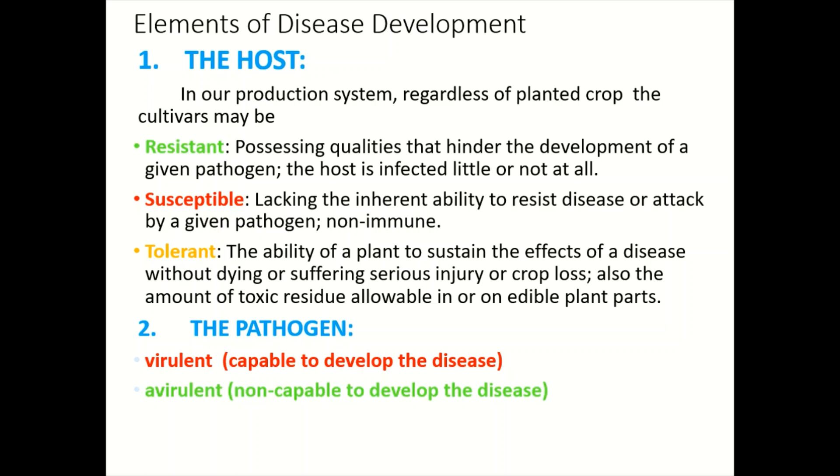Tolerance also refers to the amount of toxic residues developed inside or on the edible plant parts being at allowable levels. Number two is the pathogen. The pathogen may be virulent — meaning it has the ability to cause disease — or avirulent, meaning it is not capable of developing disease on the host plant.